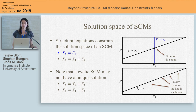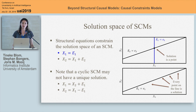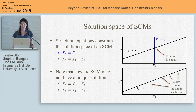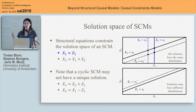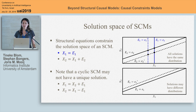For the acyclic case, the solution to the structural equations will always be unique, but this is not necessarily true for cyclic structural causal models. A simple example: X1 equals X2 plus E1, and X2 equals X1 minus E1. Both structural equations impose the same constraint on the solution space, and every point on the line is a solution. Since E is a random variable with multiple realizations corresponding to different constraints, for acyclic models all solutions will have the same distribution, but for cyclic models solutions may have different distributions.